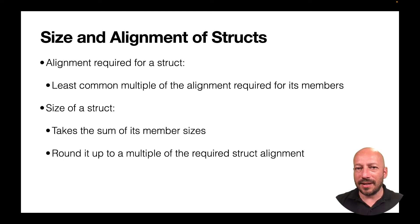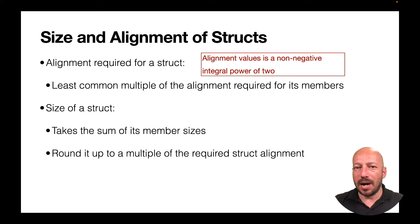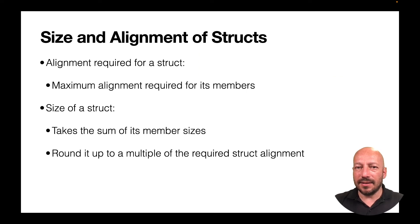In general, the alignment requirement for a struct is the least common multiple of the alignment requirements of its members. Since all built-in types have alignment requirements that are powers of two, this simplifies to the maximum alignment requirement among its members. The size of a struct is the sum of member sizes rounded up to this alignment requirement.